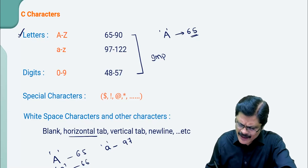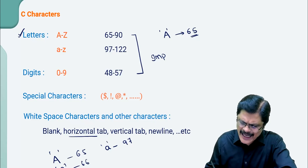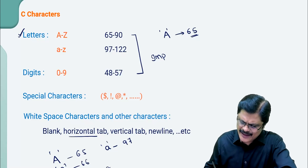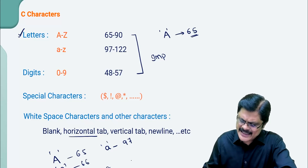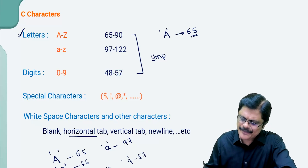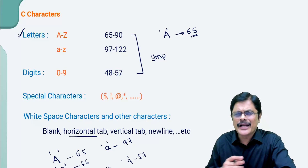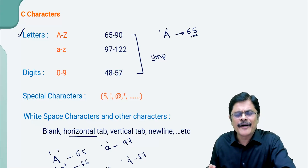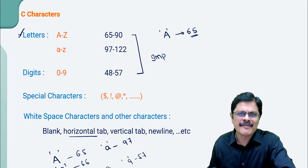For digit 0, the ASCII value is 48. Then for 1, the ASCII value is 49, and similarly for 9, the ASCII value is 57. So you can easily identify or remember these ASCII values.